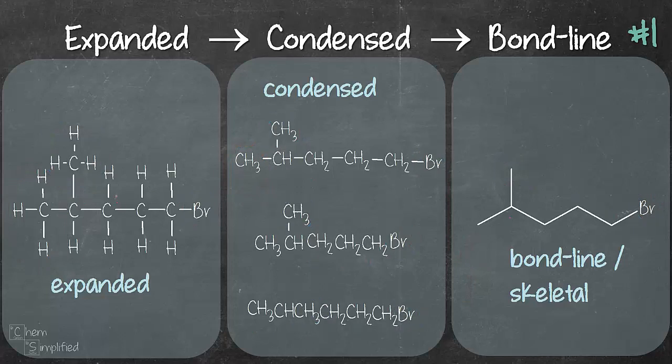So this is how the structures look like without all the circling and the numbering. So expanded form moving into condensed. It's cleaned up a little bit. We don't show that many bonds. We group our CH groups. Condensed moving to bond line or skeletal. We clean it up even further.